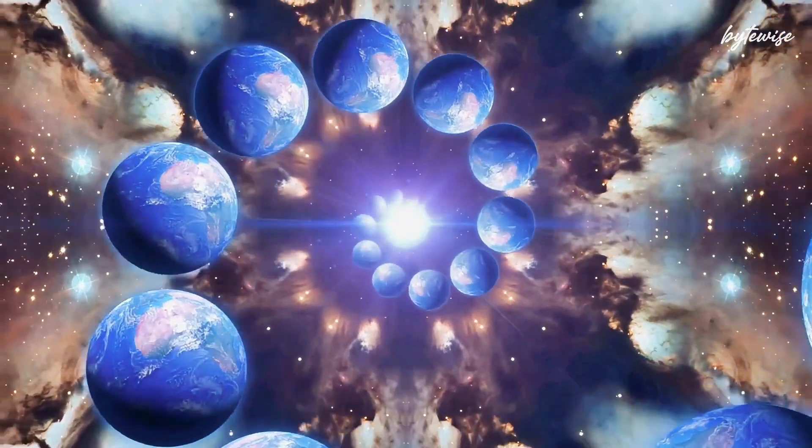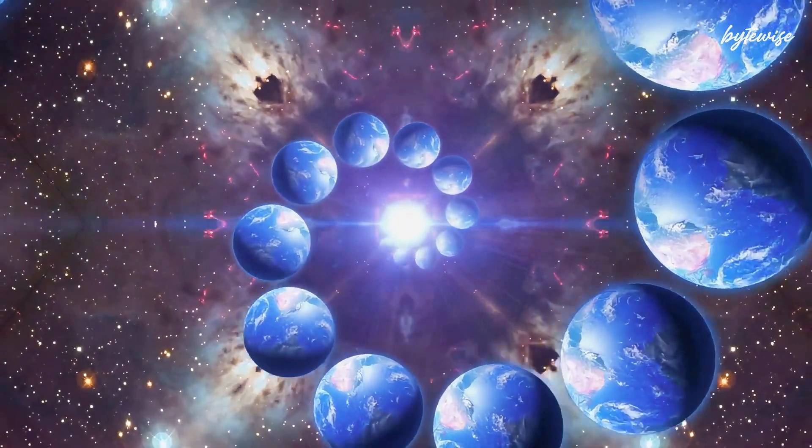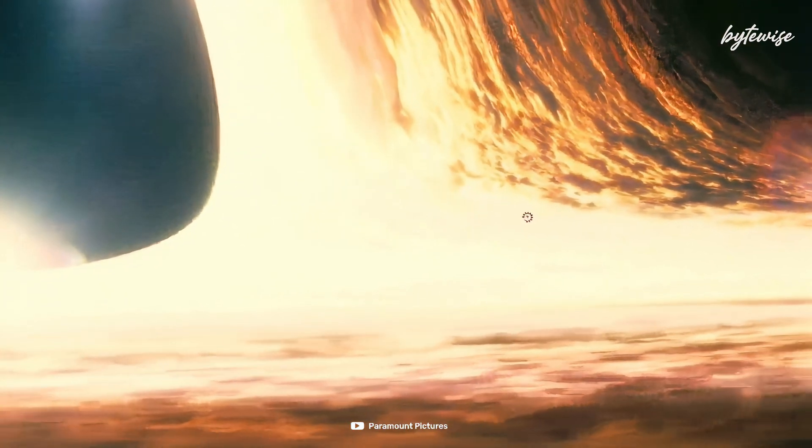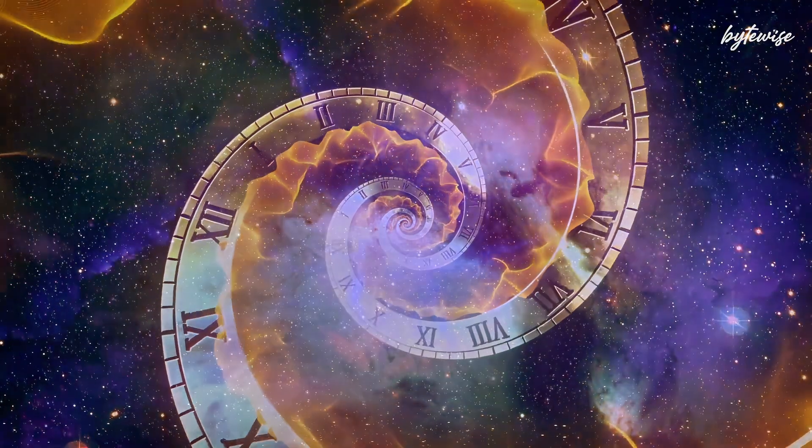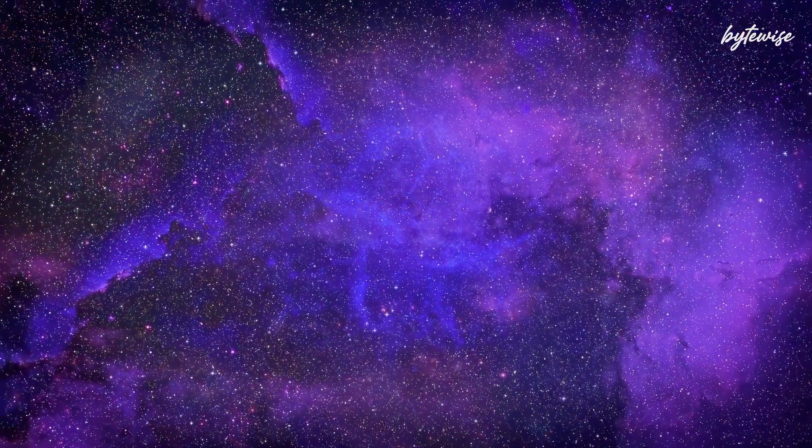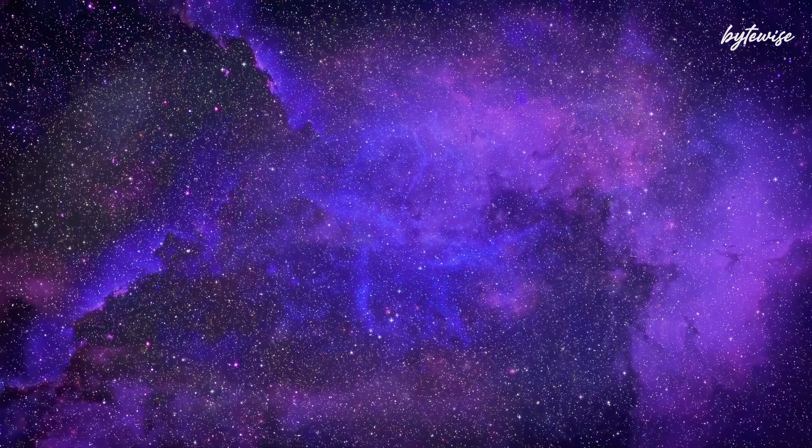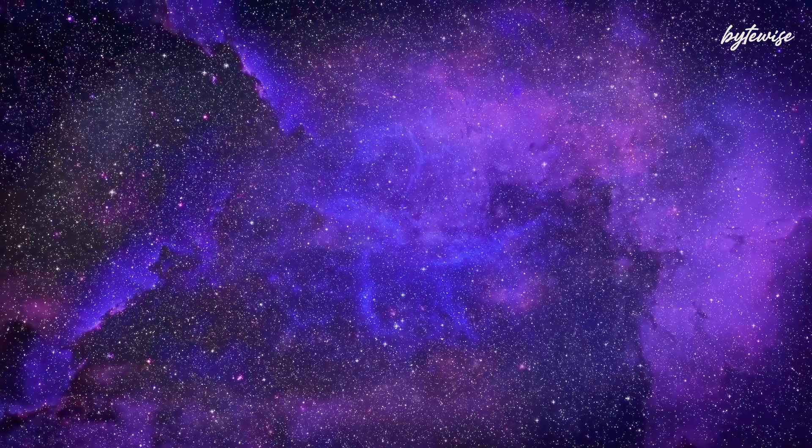In a cyclic model, each cycle could last about a trillion years, meaning the universe could have been cycling through these phases for an unimaginable amount of time. Imagine every time the universe ends, it starts again, potentially with different conditions and laws of physics each cycle.